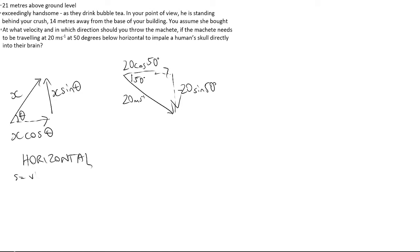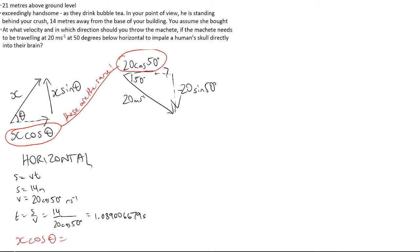From final velocity, we can see that horizontal velocity is 20 cos 50 meters per second and vertical velocity is negative 20 sin 50 meters per second. Using the horizontal equation s equals vt, we can find the time taken if wanted. However, of interest is that horizontal velocity is always the same. Therefore, x cos theta equals 20 cos 50 meters per second.